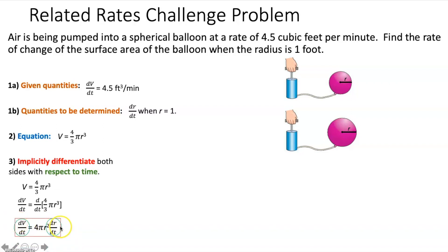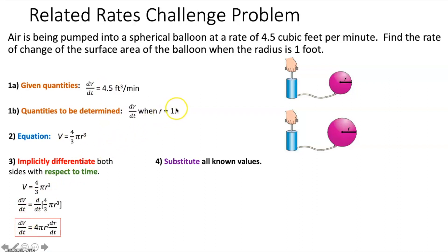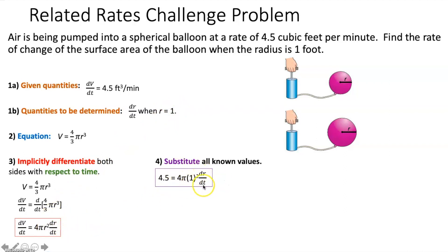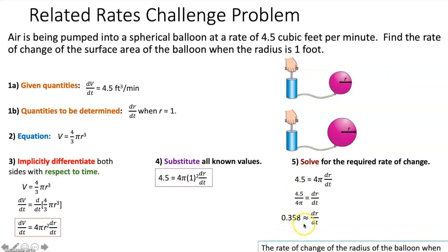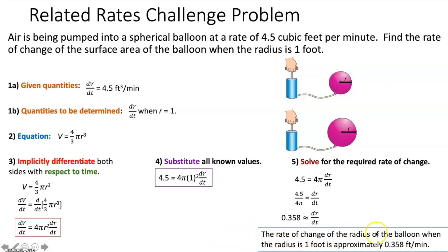We again have two rates in an equation, so it's a related rates problem. Now in step 4, we plug in 4.5 for dV/dt and 1 for R. Simplifying: 1² times 4π is just 4π. Dividing both sides by 4π gives dR/dt = 4.5 / 4π, which is approximately 0.358. We have now found the rate of change of the radius when R equals 1.